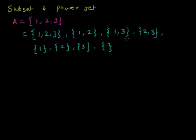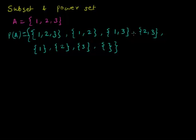These are all possible sets which can be generated out of the elements of the given set. The set which includes all these sets is called the power set, denoted by P(A). All the elements of the power set are called subsets of A. So all these small sets are called subsets of A.